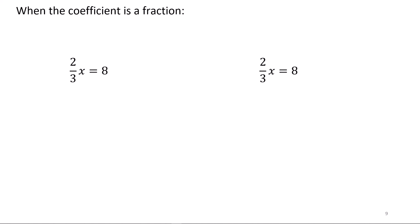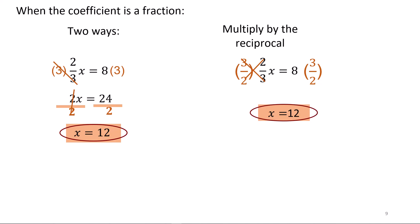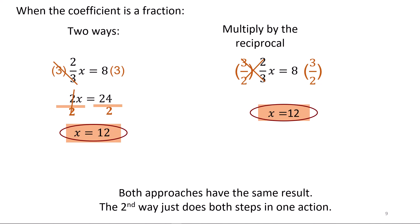In these two equations we have a fraction as the coefficient. There are two basic ways to handle the fraction. First, undo each part of the fraction separately: start with the division by multiplying both sides by 3, leaving 2x equals 24, then divide both sides by 2, giving x equals 12. The other, quicker way is to multiply by the reciprocal of the coefficient fraction — multiply both sides by 3 over 2, cancel the fraction, and 8 times 3 over 2 gives x equals 12. Both approaches have the same result; the second way does both steps in one action.